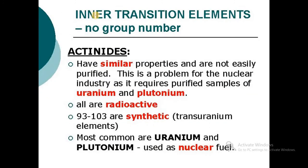Actinides are inner transition elements. Actinides have similar properties and are not easily purified. This is a problem for the nuclear industry, as it requires purified samples of uranium and plutonium.